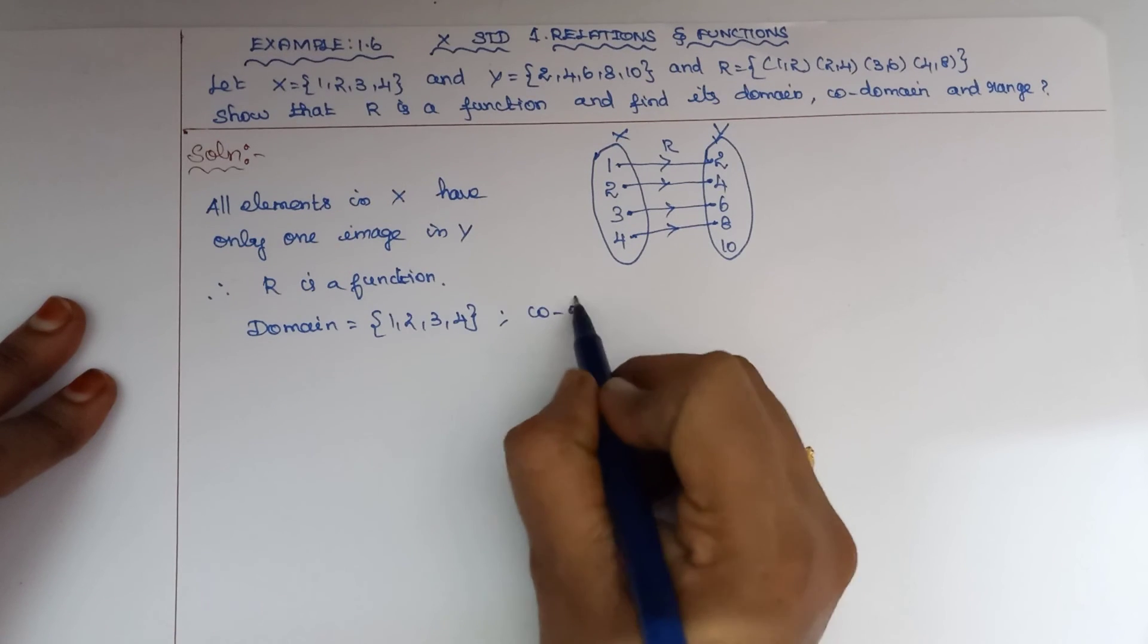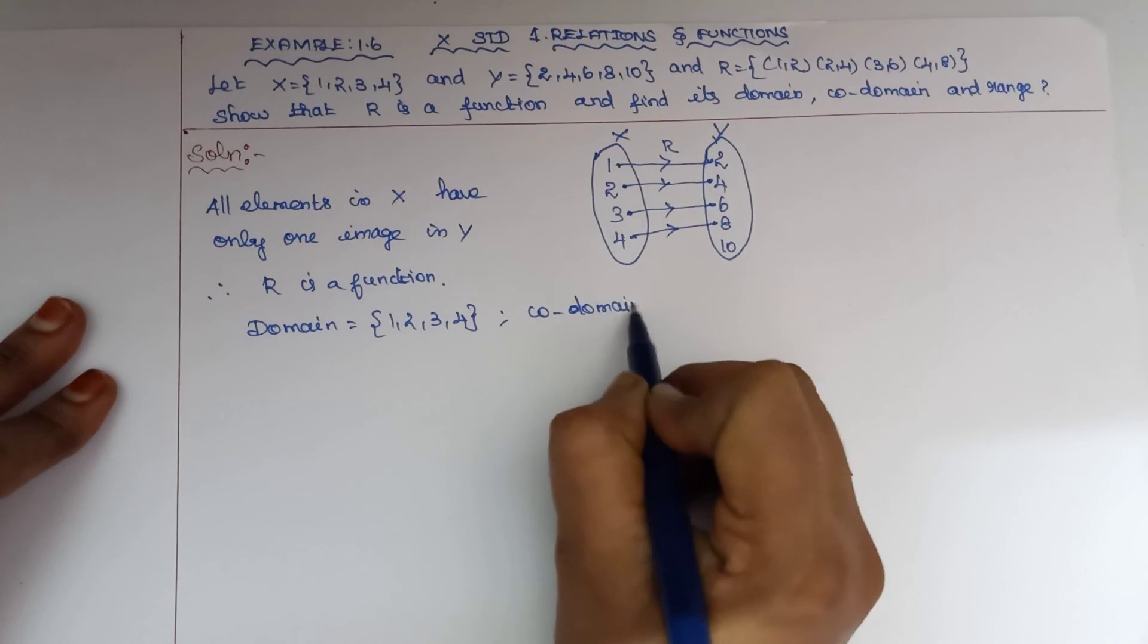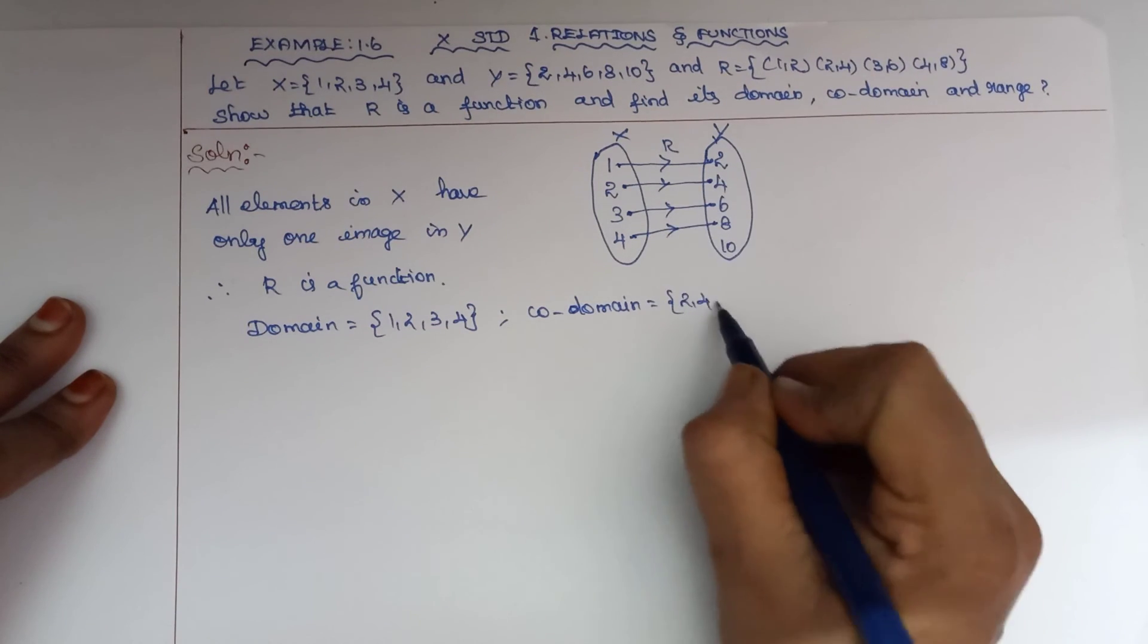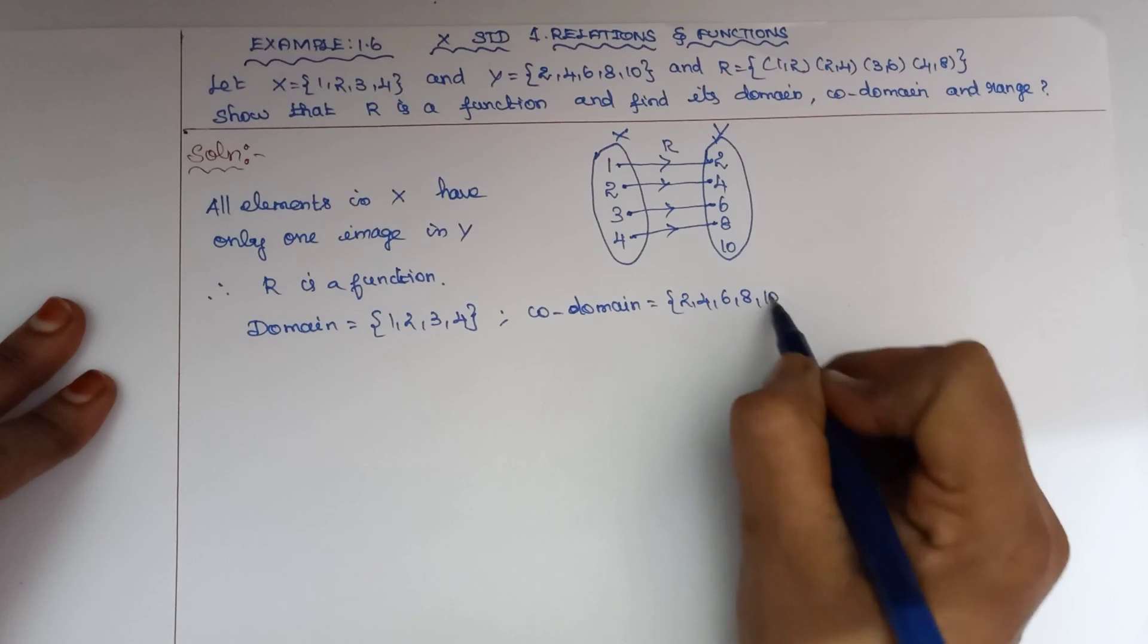Co-domain is the second set, that is the set of all elements: 2, 4, 6, 8, 10.